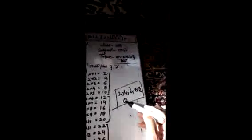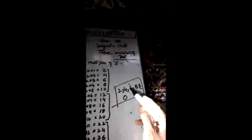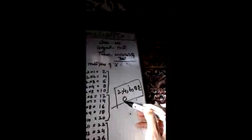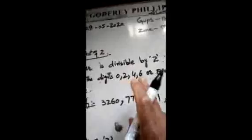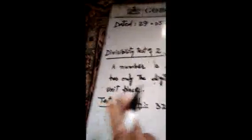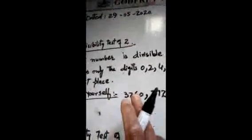So it is easy now to say whether a number is divisible by two or not. If you find the number having at its unit place any of these digits, it is divisible by two. If the digit at its unit place is other than these numbers, it is not divisible by two. The divisibility test of two: a number is divisible by two if it has only the digit zero, two, four, six, or eight at its unit place.